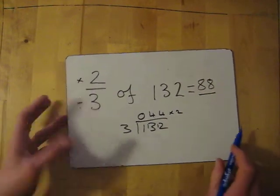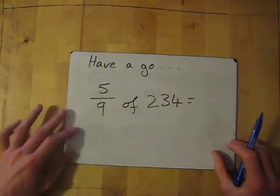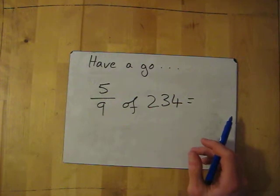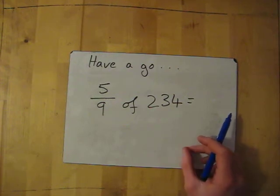So divide by the bottom, times by the top. Now if you want to have a go yourself, 5 ninths of 234. Again, simple, divide by the bottom, times by the top. I'm going to let you pause it if you want. I'll go through the question in 3 seconds. So 3, 2, 1.